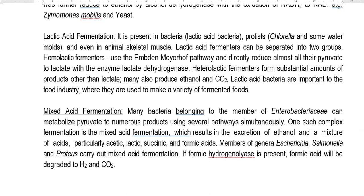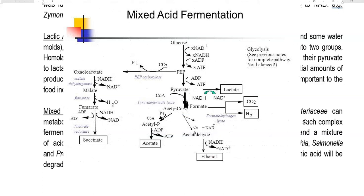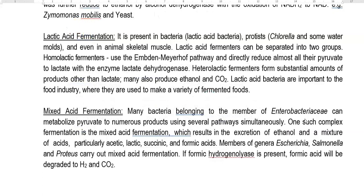Many bacteria belonging to the Enterobacteriaceae can metabolize pyruvate to numerous products using several different pathways simultaneously. One such complex fermentation is referred to as mixed acid fermentation. In addition to ethanol, a mixture of acids including acetic acid, lactic acid, succinic acid, and formic acid can be produced. This is commonly found in organisms such as Escherichia, Salmonella, and Proteus. If the organism possesses formic hydrogenlyase, it is capable of converting formic acid into hydrogen and carbon dioxide.